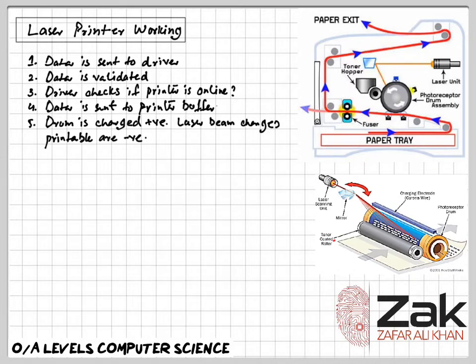A printing drum is given a positive charge. As this drum rotates, a laser beam scans through it, removing the positive charge in certain areas. The laser beam creates negatively charged areas which exactly match the text and images of the page to be printed. The drum now has all those areas which need to be printed as negative.